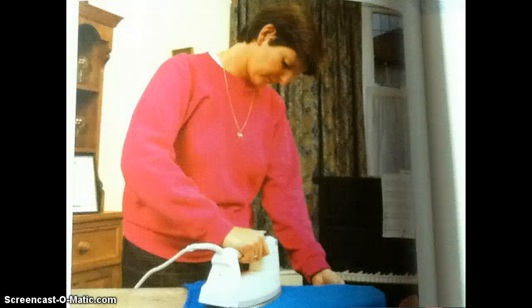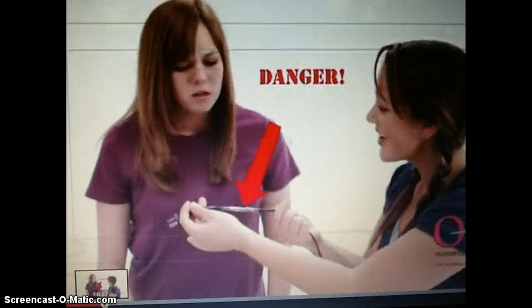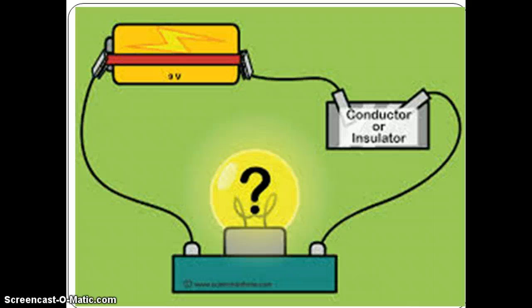An iron is both an insulator and a conductor — it contains both plastic and metal. What about cords? Are they both insulators and conductors? Yes, they are. We all enjoy the comforts that electricity provides for us. Remember the dangers of electricity and be smart and safe. As you investigate on your own circuit board, you will find out for yourself what items are conductors of electricity and what items are insulators.